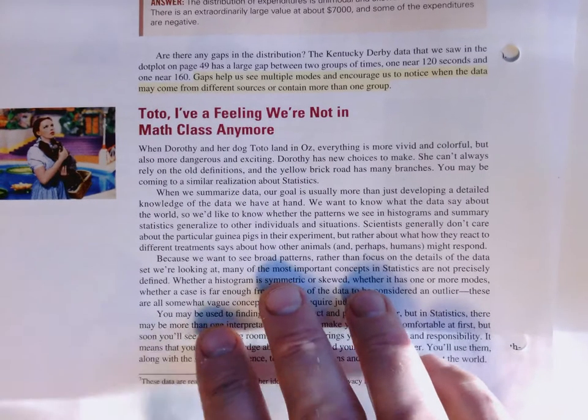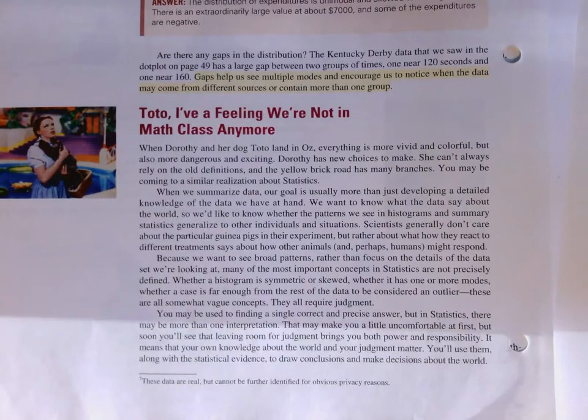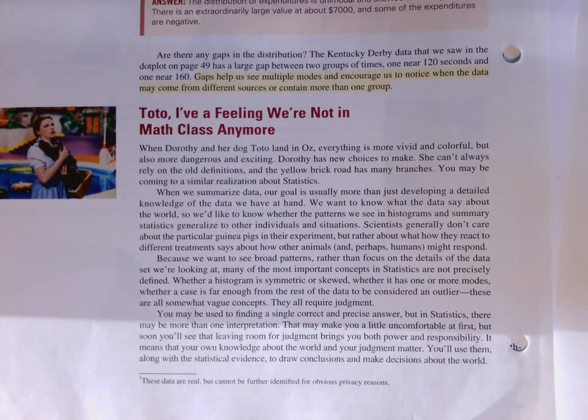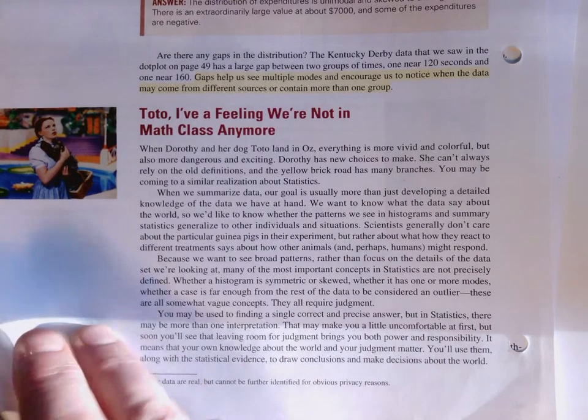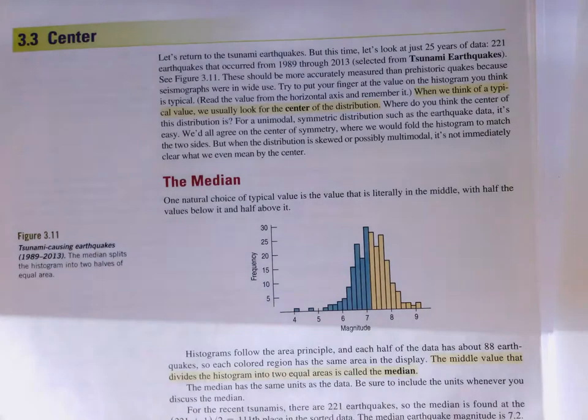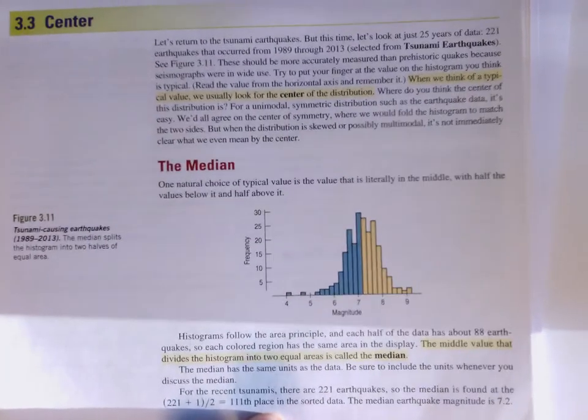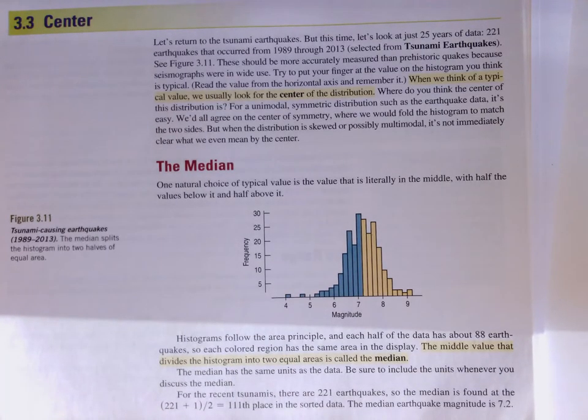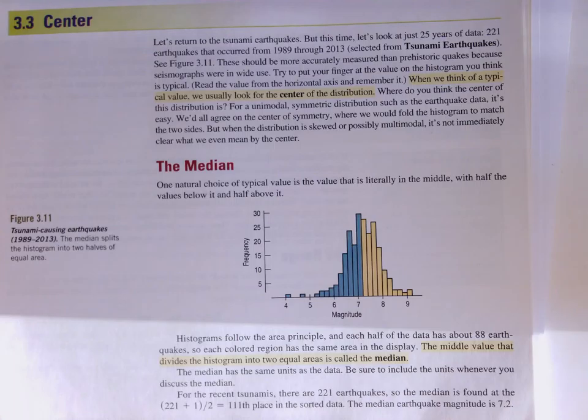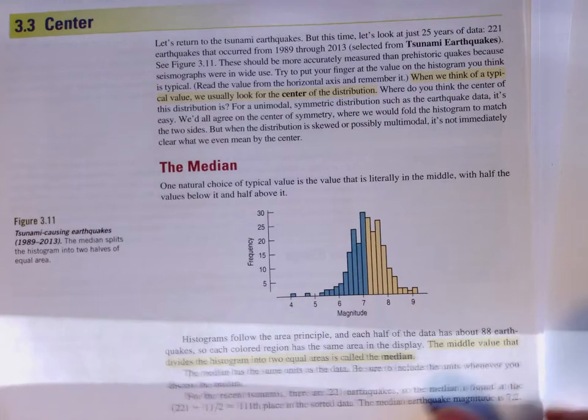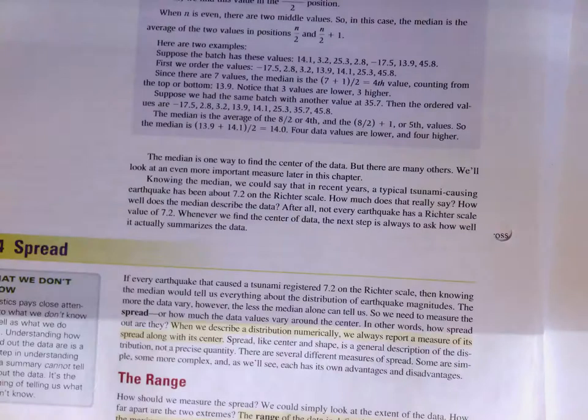Whenever we think about distributions, we're really thinking of a couple things. We're talking about the shape of the distribution. So here we have the idea of a bimodal distribution. Some other examples where we think about describing shape. And then this kind of sidebar here about Toto, I feel like I'm not in math class anymore. And the importance of judgment in statistics. That really isn't as much of a key learning outcome as it is in mathematics. So it's useful to be reading that as well.